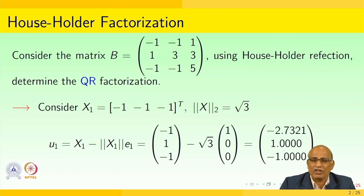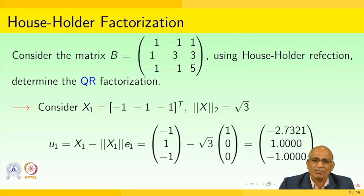Ultimately what we want to do is write the matrix B as a product of two matrices — one I call Q and another I call R. We will see in due course of time what the forms of Q and R are, so that when you multiply these two matrices, you would get back the matrix B.